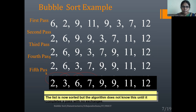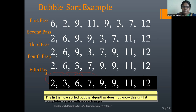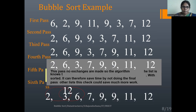Now comparing all values, no swapping is done in any comparison, so we stop. Since all values are arranged in order, the highest value was present at the end and was bubbled first. So 12 is present at the end and is bubbled up first. Next, 11 goes up, followed by both 9s, then 7, then 6, then 3, and finally 2. This is the working of Bubble Sort.